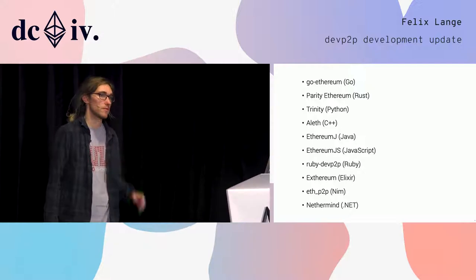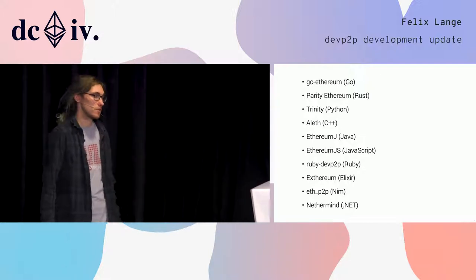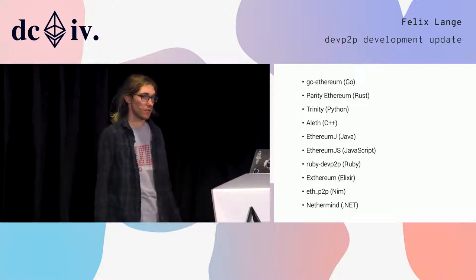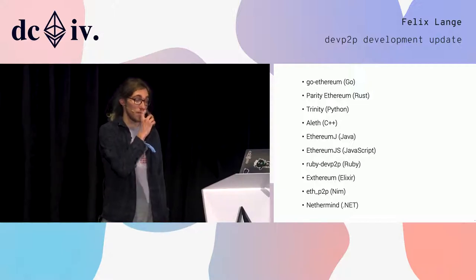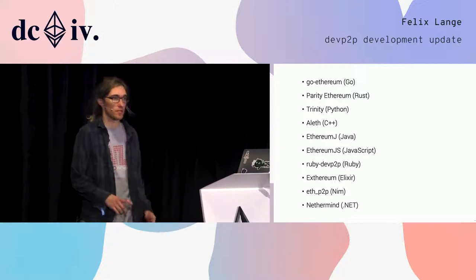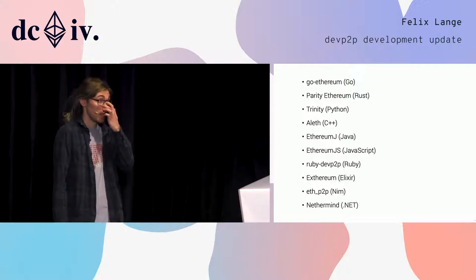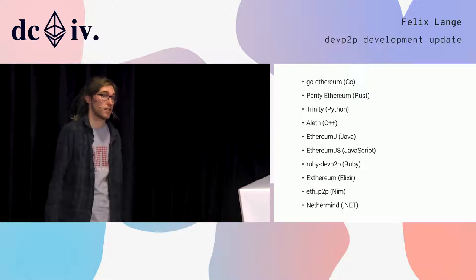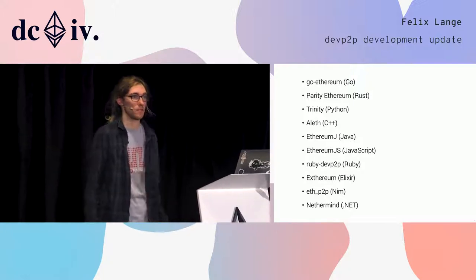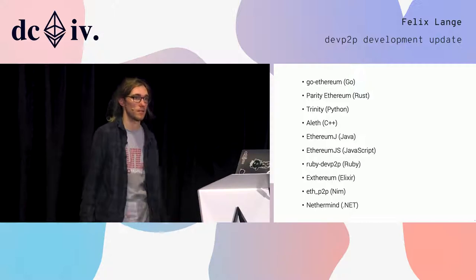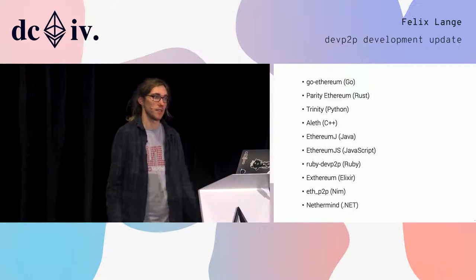Apart from implementations that just speak the protocol, there are a couple of tools around. Specifically, there are a couple of DHT crawlers, some open source and some not. The most famous one is ethernodes.org, which you can visit to check stats — a DHT crawler explores the node discovery system to see which nodes are around and lists those on a web page. And for networking nerds, this year ConsenSys released Wireshark dissectors for the protocols, which makes it much easier to debug protocol issues because I can load it up in Wireshark, see what a node is doing, and it labels all the packets being sent on the wire by name.